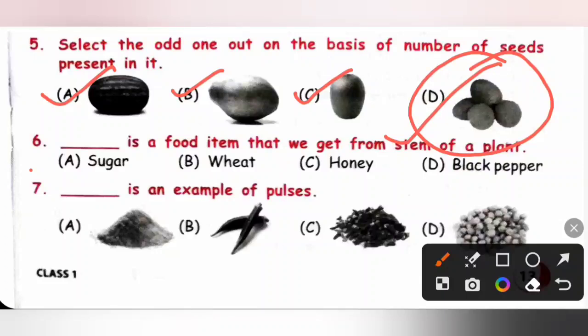Sixth one, dash is a food item that we get from stem of a plant. Option A is sugar, B: wheat, C: honey, D: black pepper. Sugar is made from sugarcane juice which is obtained from the stem of a sugarcane plant. So option A is the correct answer.